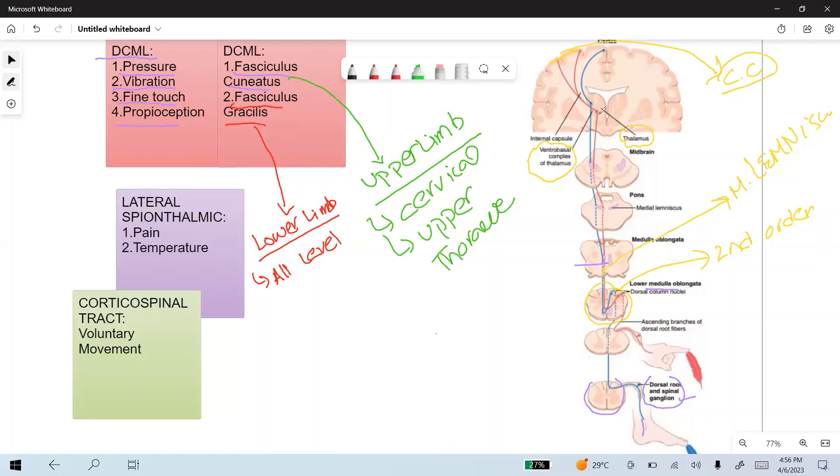Thalamus is basically the relay center for the sensory information. Next is another tract, the lateral spinothalamic tract. The lateral spinothalamic tract carries the pain and temperature sensation, while the corticospinal tract is the motor tract, the descending tract that controls the voluntary movement of the body.